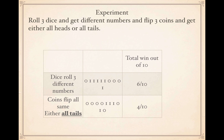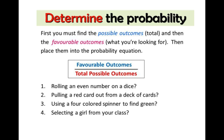Here are the results. Now a quick reminder on the formula for probability — this is just the way to write the fraction. First you must find the favorable outcomes, then the total possible outcomes. This is just a reminder of how to write probability.